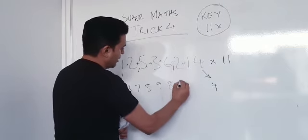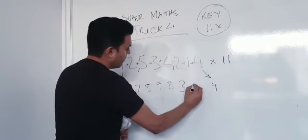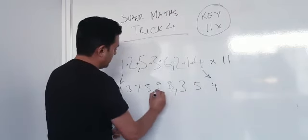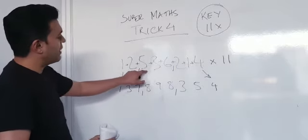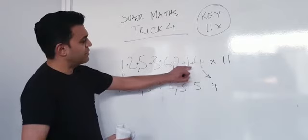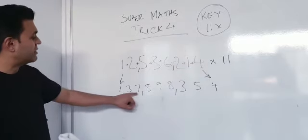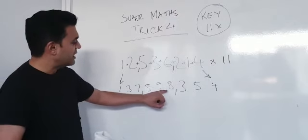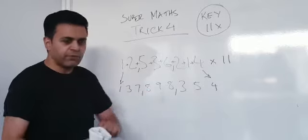So, 2 plus 1, 3. 1 plus 4, 5. So, the answer to 12,536,214 times 11 is 137,898,354.